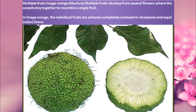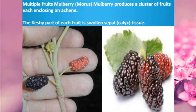Multiple fruits, such as osage orange, develop from several flowers where the carpels stay together to resemble a single fruit. The small individual fruits are called achenes, which are completely enclosed in receptacle and sepal tissues. Mulberry is also an example of multiple or composite fruit — it produces a cluster of fruits each enclosing an achene, and the fleshy part of each fruit is swollen sepal tissue.